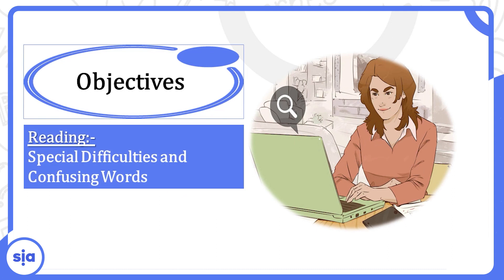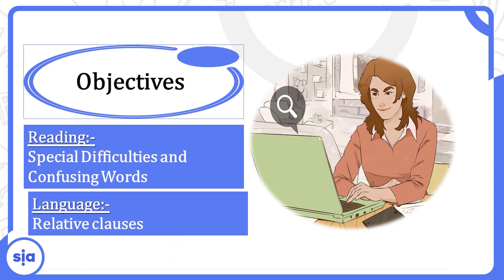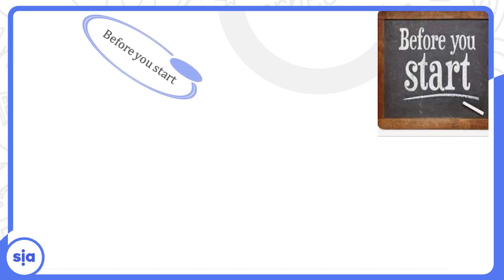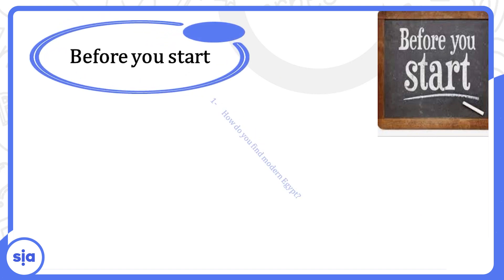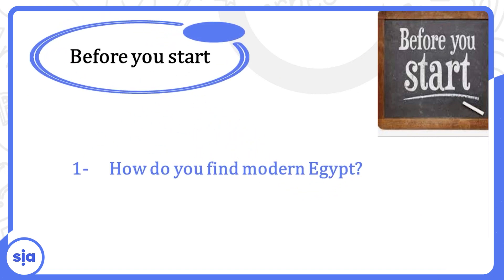Today's goals include special difficulties and confusing words, and relative clauses — we're going to start talking about relative clauses and their meanings. Before we start, think about this question: How do you find modern Egypt? What do you think of modern Egypt?